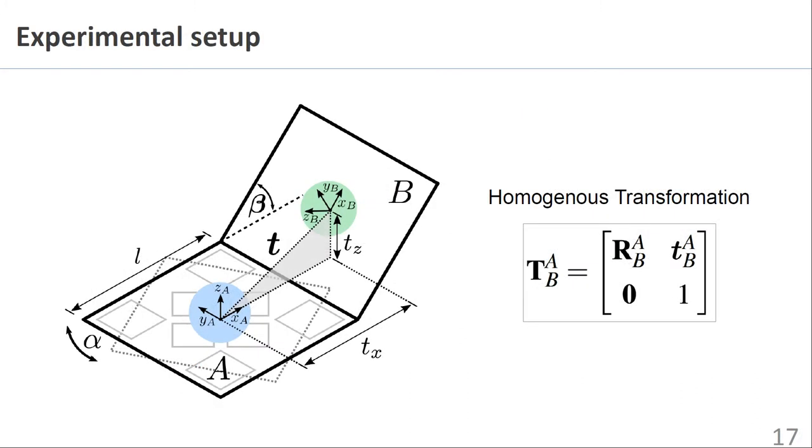This design allows for field generators to be tilted with respect to one another. In this example, field generator A shares a common edge with field generator B. The angle alpha represents the rotation of field generator A about its z-axis, which is 0 degrees in this case. The tilt of field generator B is shown as beta. Given that the dimensions of the field generators are known and the tilt angle beta is also known, then the location of field generator B can be described by a single homogenous transformation matrix, where R is the rotation matrix, and little t is the displacement between the origins of field generator A and field generator B.